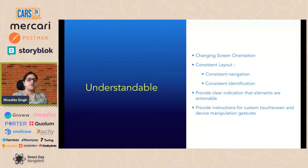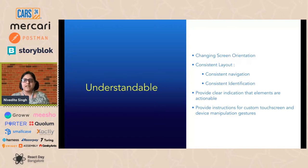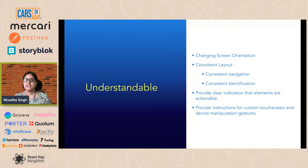The third principle: your content must be understandable. Your screen reader should detect when content orientation changes, and your screen should support both orientations — going back to the mobility example where someone's device is attached to their wheelchair and they can't change its orientation. Your layout should be consistent: navigational mechanisms repeated on multiple pages should appear in the same order, components with the same functionality should work the same way everywhere, and you should provide instructions for custom touch screen gestures.